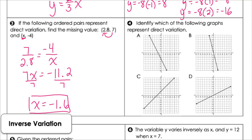Number four asks which graphs represent direct variation. Remember, in order to be direct variation, the graph must go through (0,0). Looking at those graphs: the first one's x and y intercept are not (0,0). E is — it passes through the origin. C is not. D is. So E and D are direct variation.